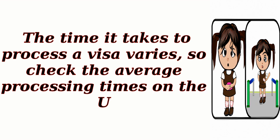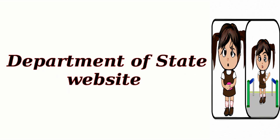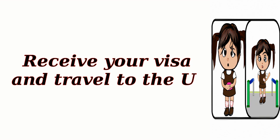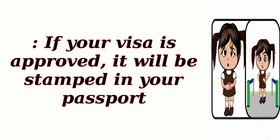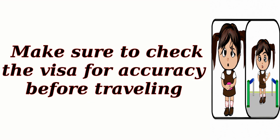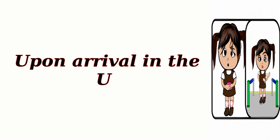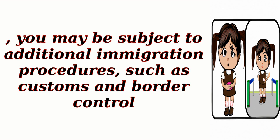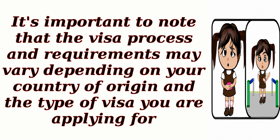The time it takes to process a visa varies, so check the average processing times on the U.S. Department of State website. If your visa is approved, it will be stamped in your passport. Make sure to check the visa for accuracy before traveling. Upon arrival in the U.S., you may be subject to additional immigration procedures, such as customs and border control. Note that the visa process and requirements may vary depending on your country of origin and the type of visa you are applying for.